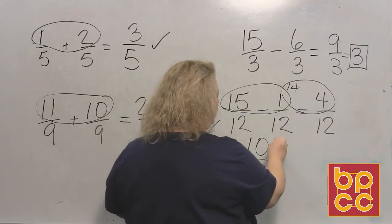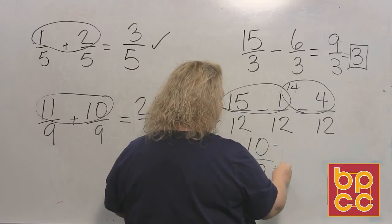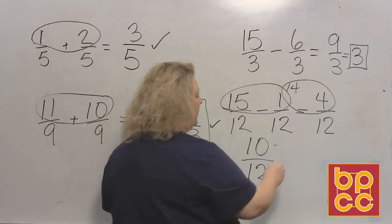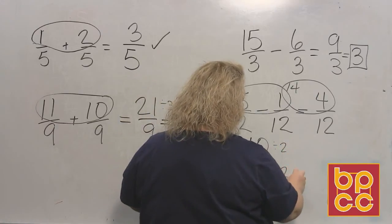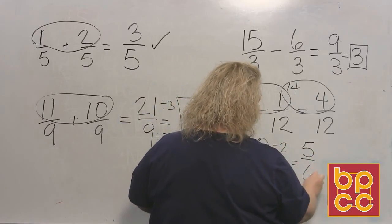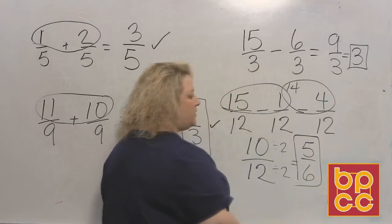And I notice that I can reduce both of these, because they are even numbers. I can reduce them both by two. So when I divide them both by two, I get 5/6. And that is my reduced fraction for that part.